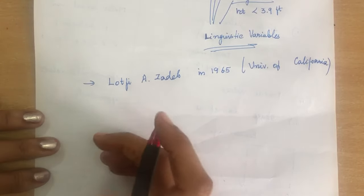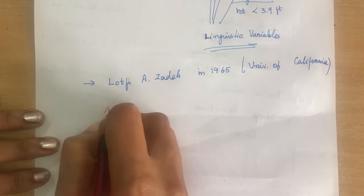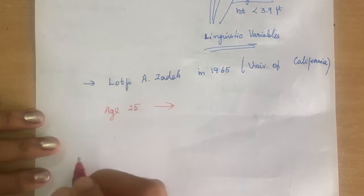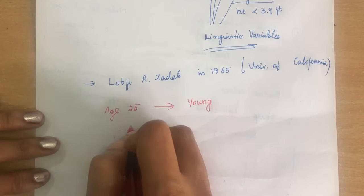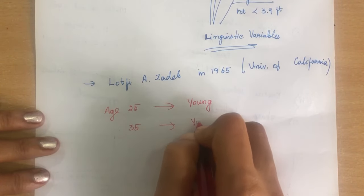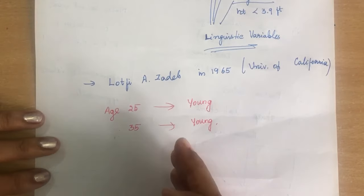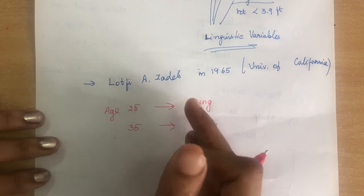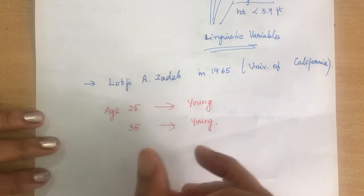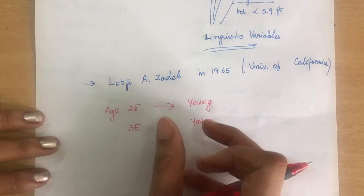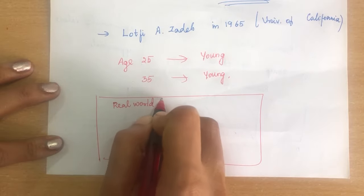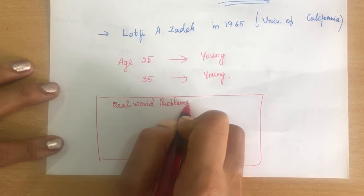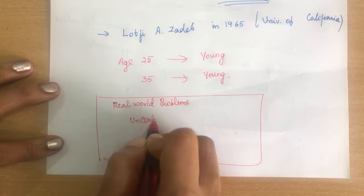Why do we use fuzzy logic? For example, if a person's age is 25, some people classify that as young. For others, even age 35 is considered young. We cannot define clear boundaries for 'young.' These problems can be solved by fuzzy logic. In real-world problems, not all problems are accurate, so we cannot solve them using Boolean logic. There exists uncertainty and ambiguity in the problems — they are not clear and are very vague.